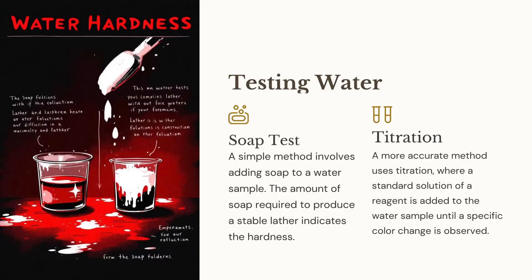How do we test for the presence of hard water? There are two main methods of testing water hardness: one is through soap test, and two is through titration. The soap test is a simple method that involves adding soap to a water sample — the amount of soap required to produce a stable lather indicates the hardness. However, a more accurate method uses titration, where a standard solution of a reagent is added to the water sample until a specific color change is observed.